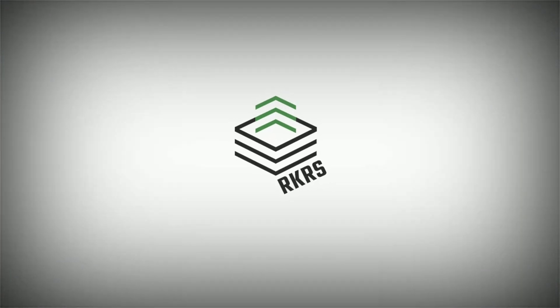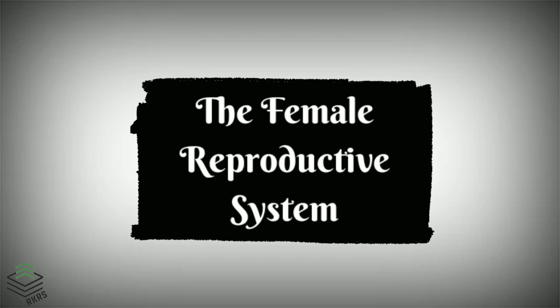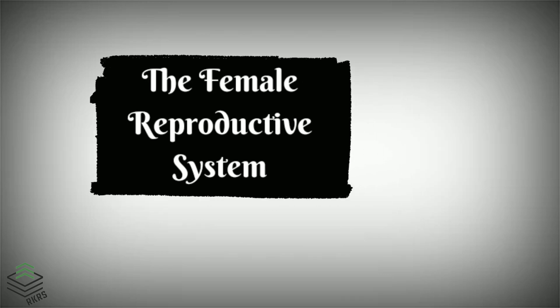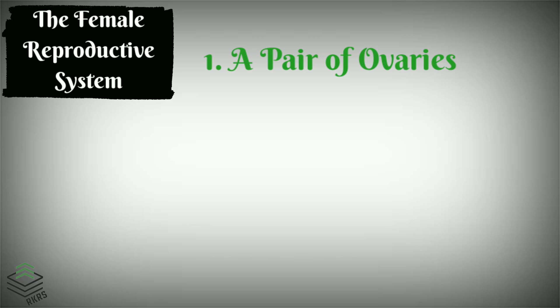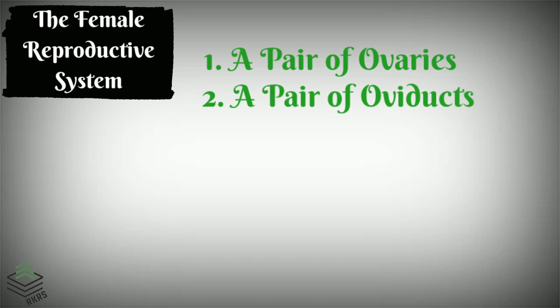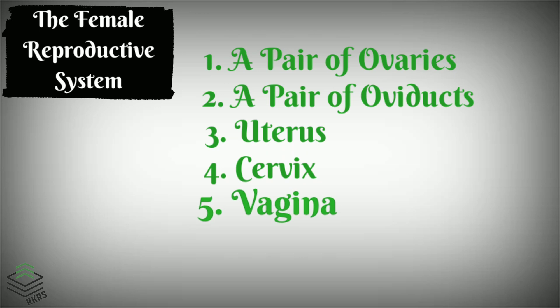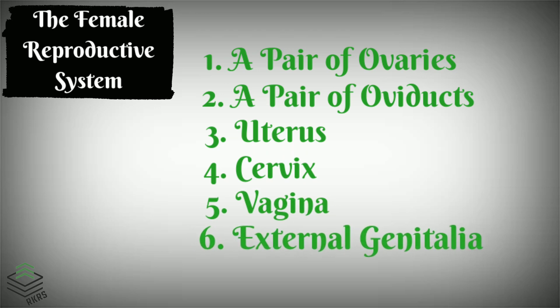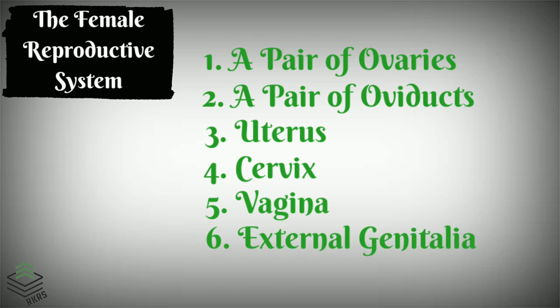We completed the introductory part and the male reproductive system. Now we move on to the next important topic, that is the female reproductive system. The female reproductive system consists of a pair of ovaries along with a pair of oviducts, uterus, cervix, vagina, and the external genitalia. These parts are structurally and functionally integrated.